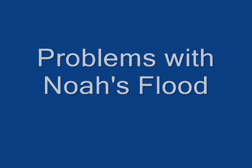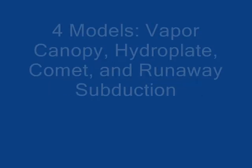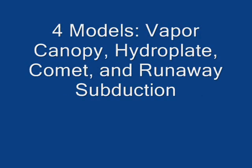First, we're going to look at where all the water came from. Four models are proposed. The first one is the vapor canopy, which was proposed in The Genesis Flood by Wickham and Morris. It says that the water from the flood came from a canopy of vapor that was suspended over the earth.